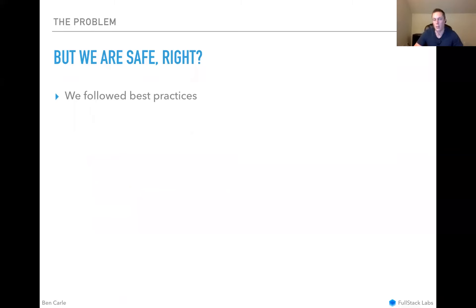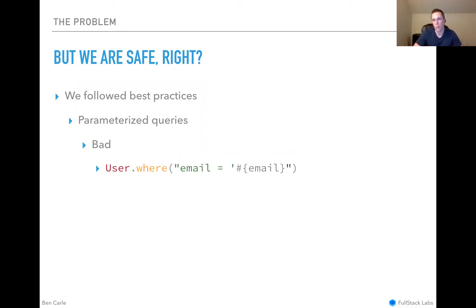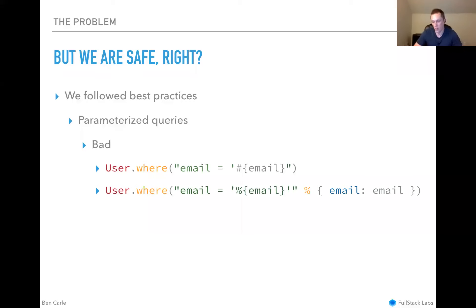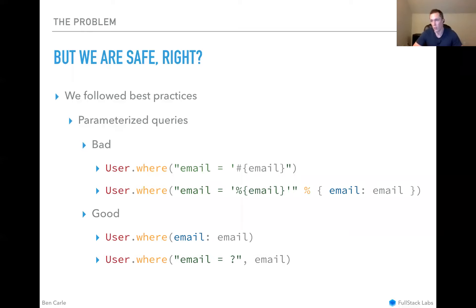We're also being safe when we interact with the database by using parameterized queries. Quick example: we're not dumping strings directly into our database queries or model queries — not throwing the email in as a template string. Instead we're using parameterized queries, using the Active Record system with the question mark template to populate the query safely. So we feel pretty good that our application is secure.